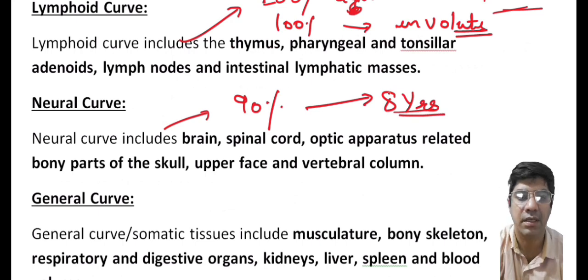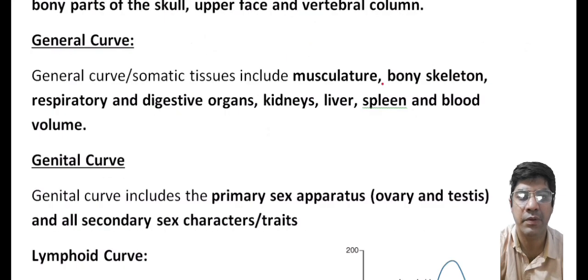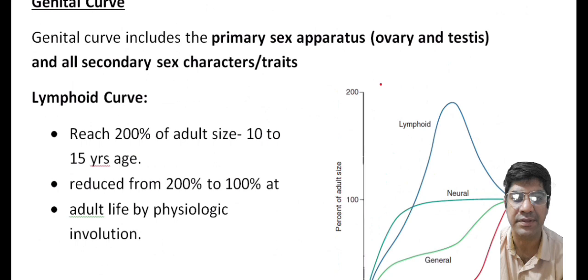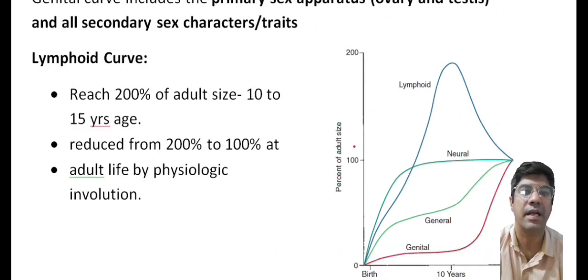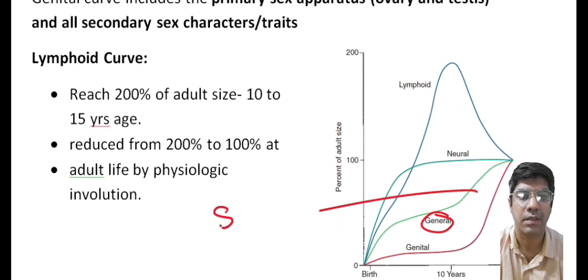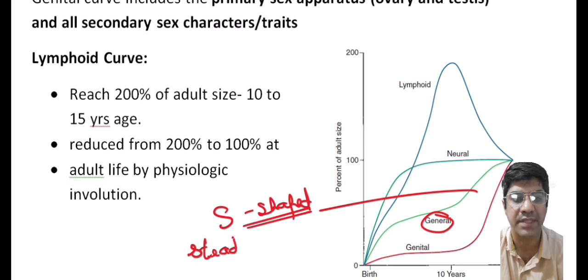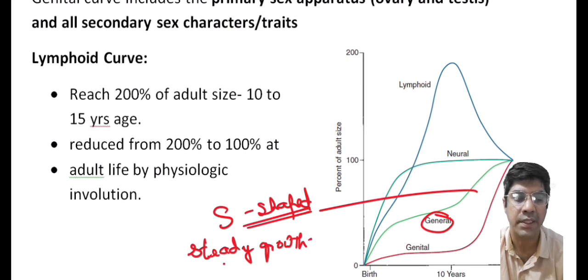The general curve includes somatic tissues like the musculature, bony skeleton, and respiratory and digestive organs. These curves show an S-shaped growth pattern — there is steady growth from birth to five years, little change from five to ten years, growth accelerates during puberty, and slows down in adulthood.